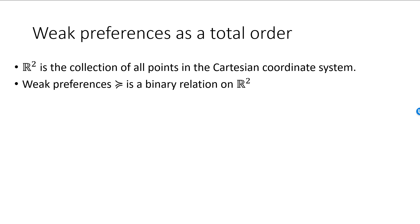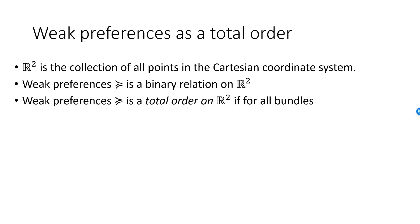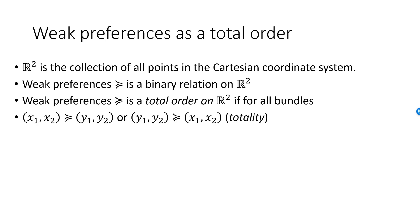So when is the weak preference relation a total order? The same four conditions that we discussed for the greater than or equal to relation on R must hold. It must be total — in words, that means that either the first bundle is weakly preferred to the second, or the second bundle is weakly preferred to the first, or both. What cannot happen is that we have two bundles and neither is weakly preferred to the other. The weak preference relation is reflexive if any bundle is always weakly preferred to itself. It would be problematic if this was not true and the consumer claimed that she strictly preferred the second bundle to the first even though both bundles were identical.